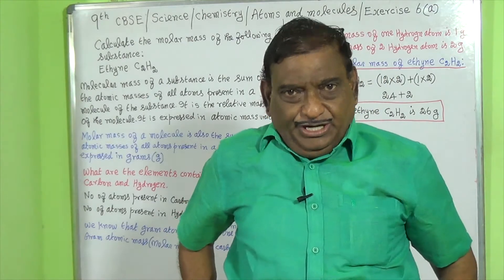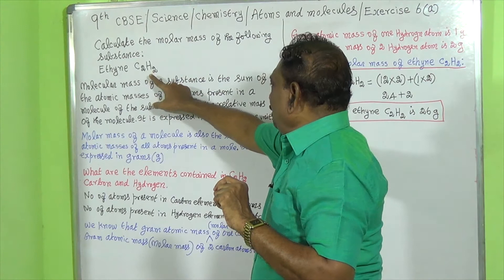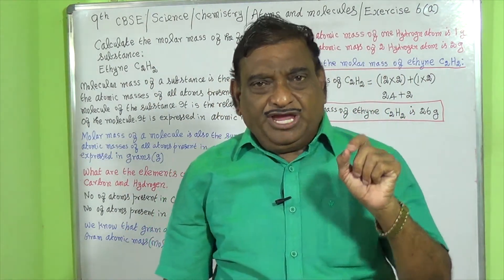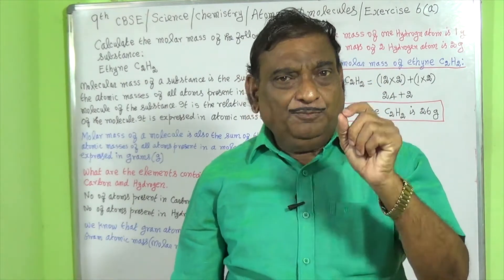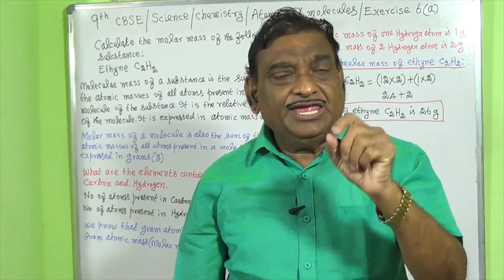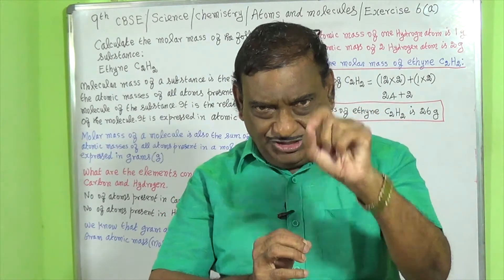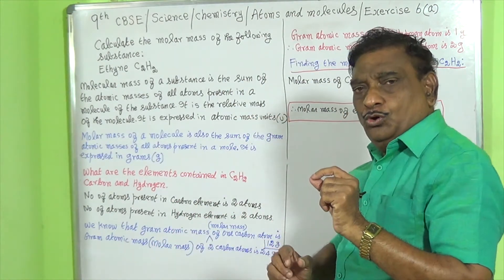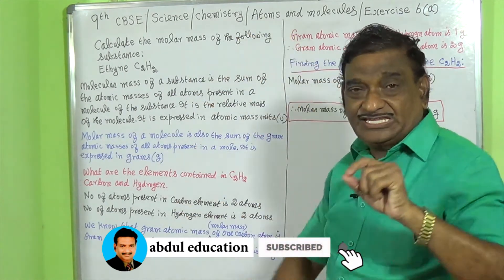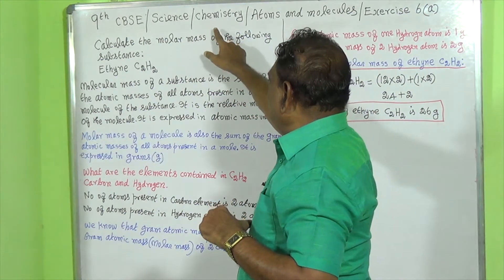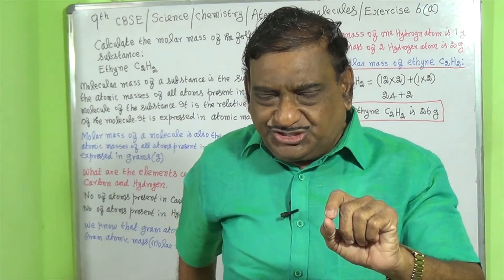My dear students and parents, in this video we are going to find the molar mass of ethyne, that is C2H2. By God's grace, my educational videos are available on YouTube for 9th CBSC, 10th CBSC, Plus 1 CBSC, Plus 2 CBSC, NEET and IAT students in the subjects mathematics, physics, chemistry, zoology and botany in English. We are going to see sum exercise 6A in the chapter Atoms and Molecules in the subject science, that is chemistry, for 9th CBSC students. It is also useful to 10th CBSC, Plus 1 CBSC and Plus 2 CBSC students.